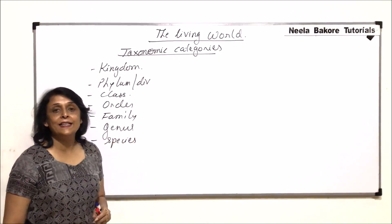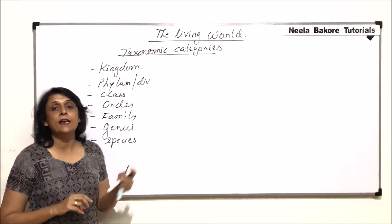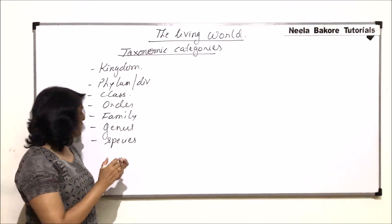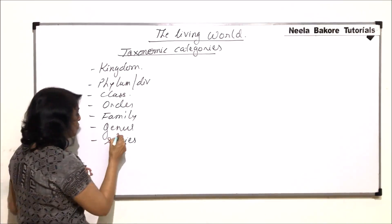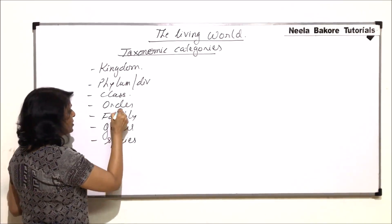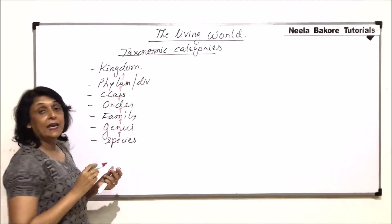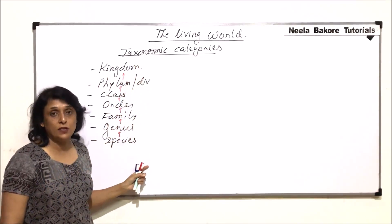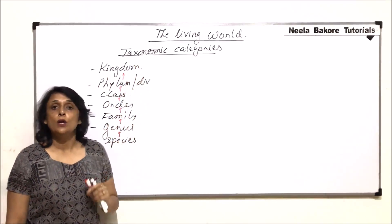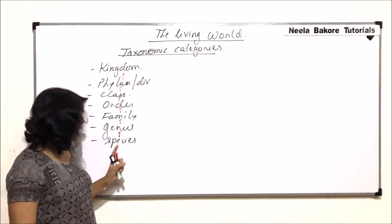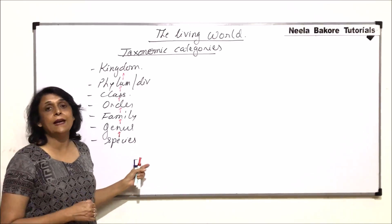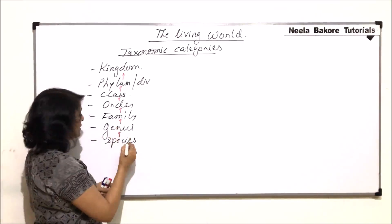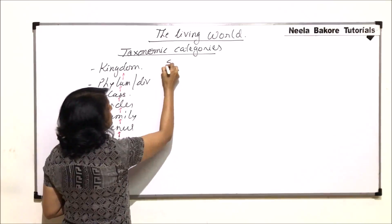These are the categories. If we are arranging them in ascending or descending order, ascending means going from the smallest group to the largest group, and descending order means coming from kingdom to species. This is how those categories are arranged in the hierarchy. We will talk about all these categories by taking certain examples, starting with the lowest — that is the species.